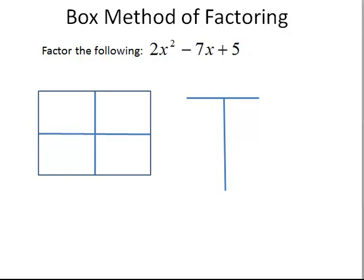Our first step will be to write the first term, which is 2x squared, in our first box. Then we will write our last term in the last box, so here we have plus 5.